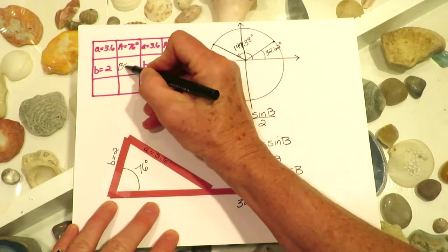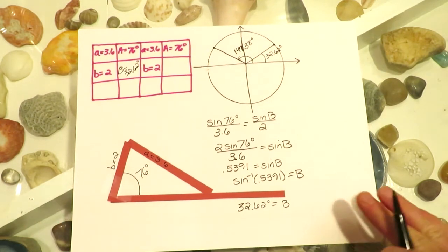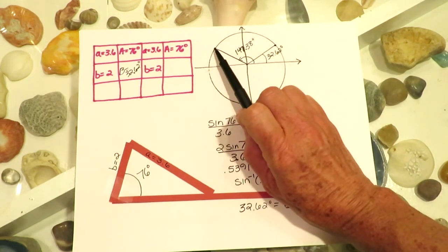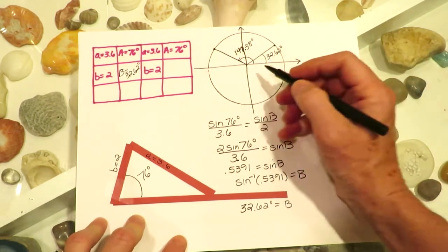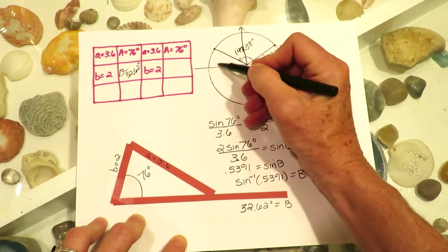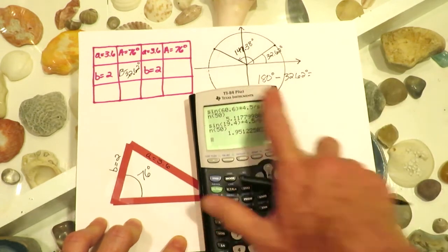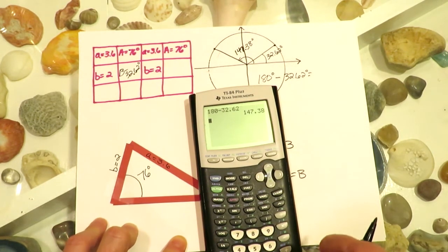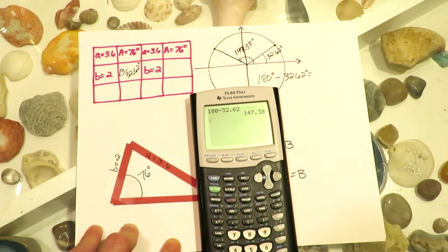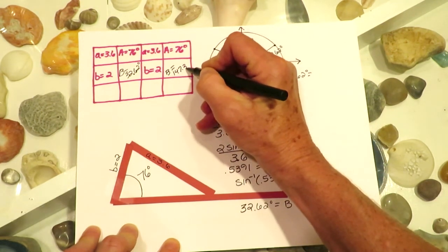So angle B could be 32.62 degrees. But there's always a second angle that has the same sine value — notice the y-coordinates match on the unit circle. If I take 180 degrees and subtract 32.62, because this angle has to be the same size, I obtain 147.38. So the other angle that B might be is 147.38 degrees, and I fill that into the chart.